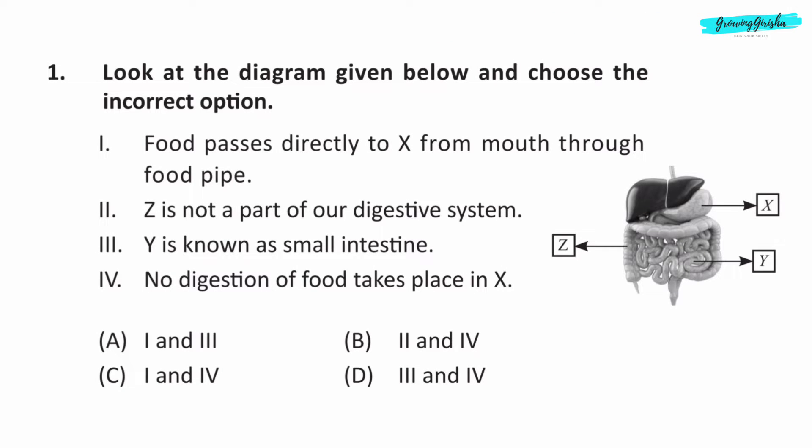Question 1. Look at the diagram given below and choose the incorrect option. X is stomach, Y is small intestine, Z is large intestine. Statement 1: Food passes directly to X from mouth through the food pipe. This is correct. Statement 2: Z is not a part of our digestive system. Z is large intestine and it is a part of digestive system, so this statement is incorrect. Statement 3: Y is known as small intestine. This is correct. Statement 4: No digestion of food takes place in X. This is incorrect. Digestion of food takes place in X. So answer is option B. Statement 2 and 4 are incorrect.